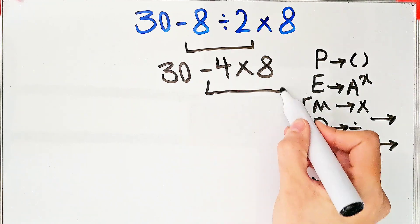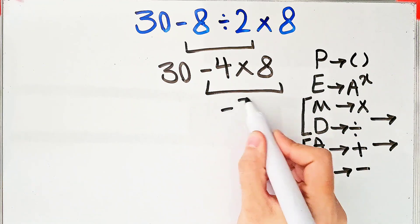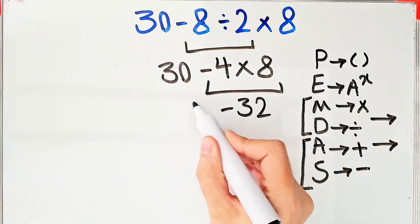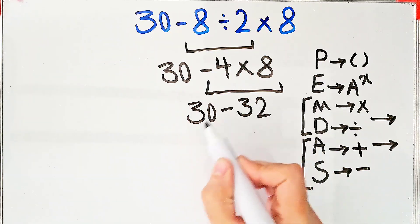4 times 8 equals 32. Now we have 30 minus 32, which equals negative 2.